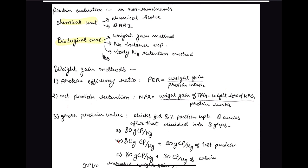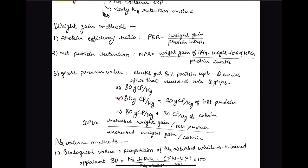In the chemical method you look at the chemical structure of the protein — the amino acid content — and evaluate it. In biological evaluation you use live animals for the purpose of evaluating the feed ingredient. First let us look at biological evaluation methods, the first of which is the weight gain method, where we look at the gain in weight of the animal. The first measure is Protein Efficiency Ratio (PER): weight gain divided by protein intake.